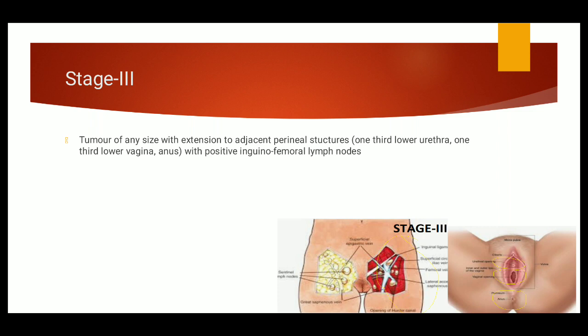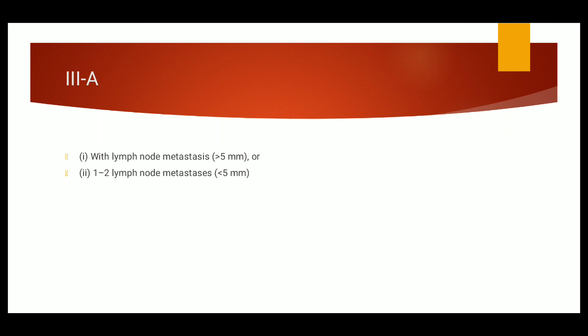Now Stage 3 is further divided into 3a and 3b. What is in 3a? In 3a, with a lymph node metastasis of more than 5 mm, or 1 to 2 lymph node metastases of less than 5 mm. So if we have less than 5 mm metastasis in 1 to 2 lymph nodes, or even 1 lymph node of more than 5 mm is involved, that is Stage 3a. What happens in Stage 3b? If 2 or more lymph nodes are of more than 5 mm, or 3 or more lymph nodes are less than 5 mm, that is the difference.